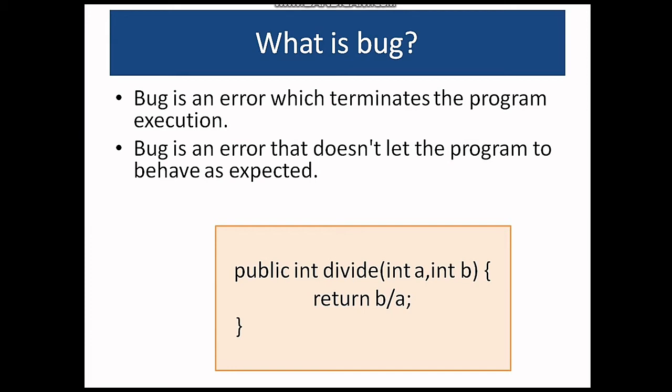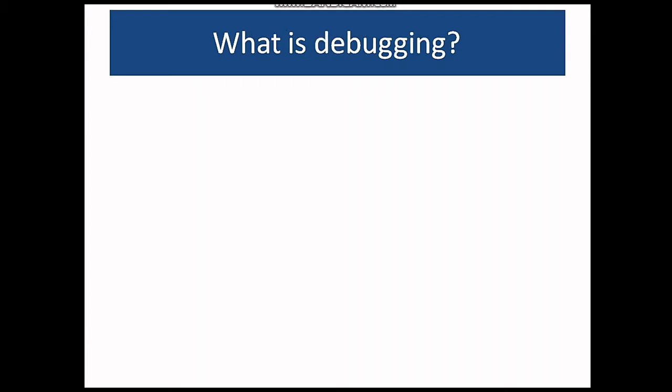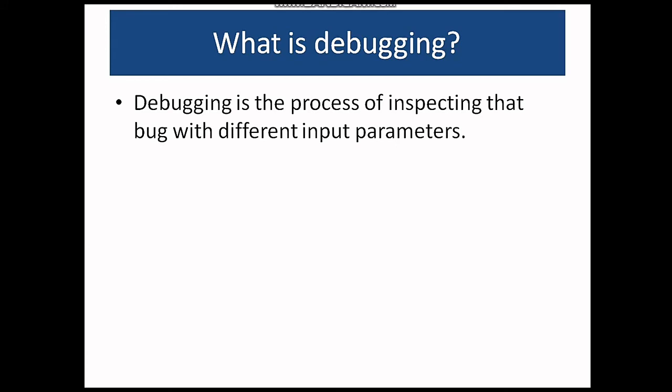The process of finding out that the problem lies in the value of a and that the value of a is because of which the program has terminated is called debugging. So debugging is a process of inspecting a bug with different input parameters. In simple words it is de plus bug.